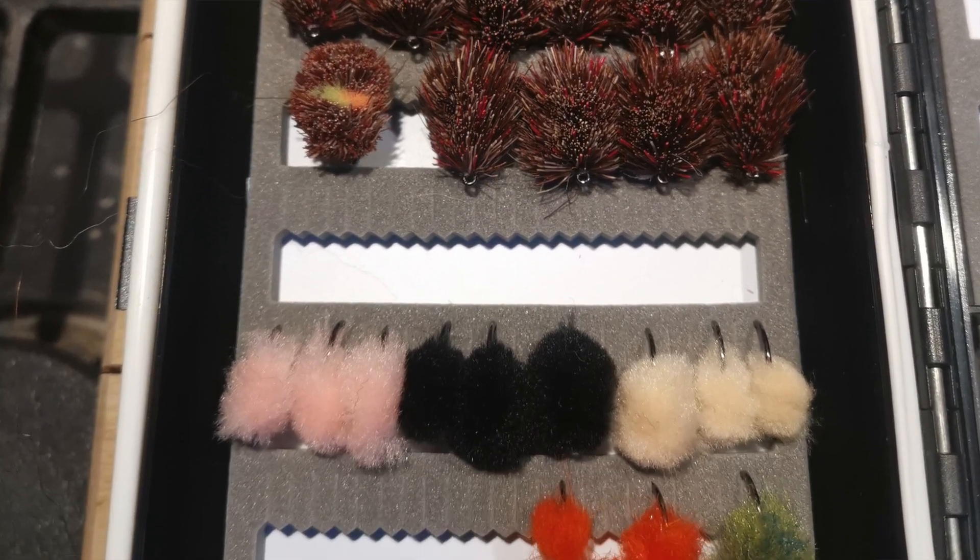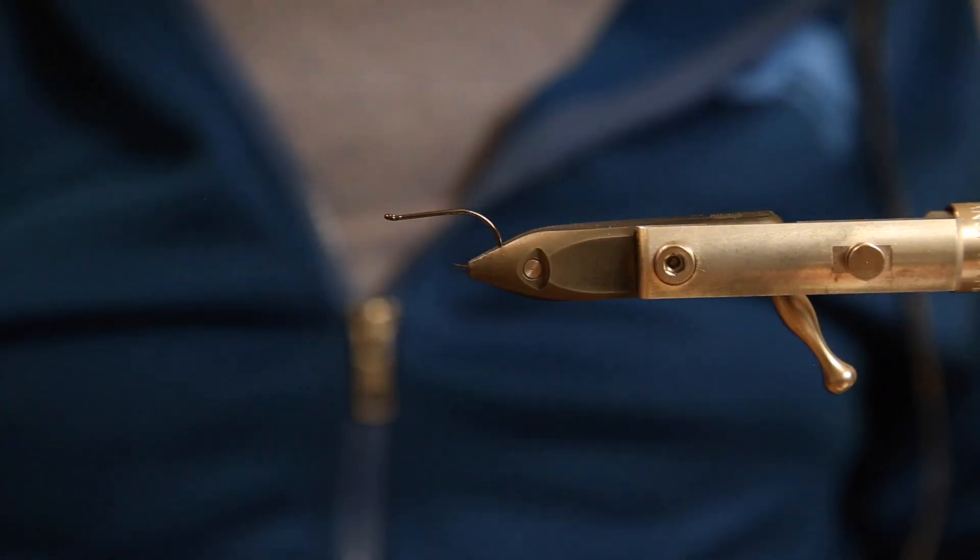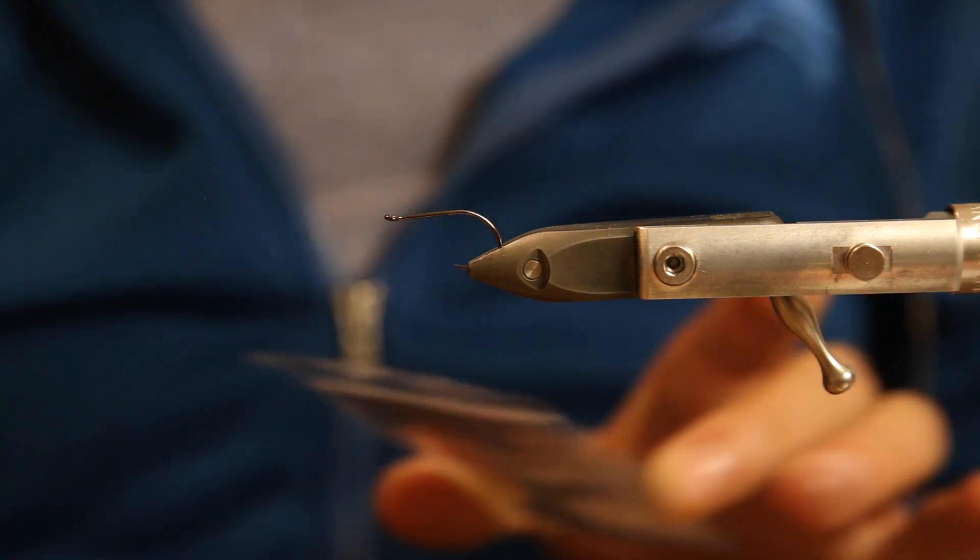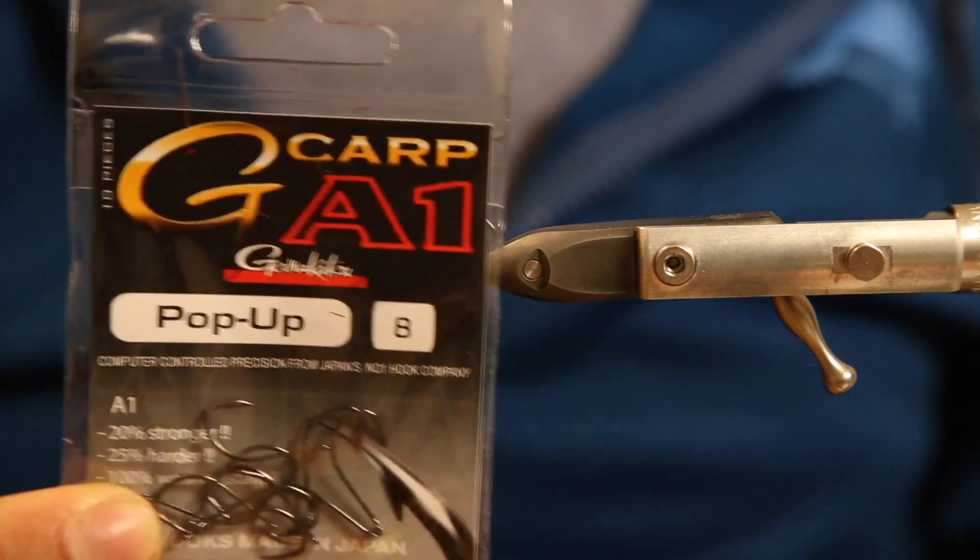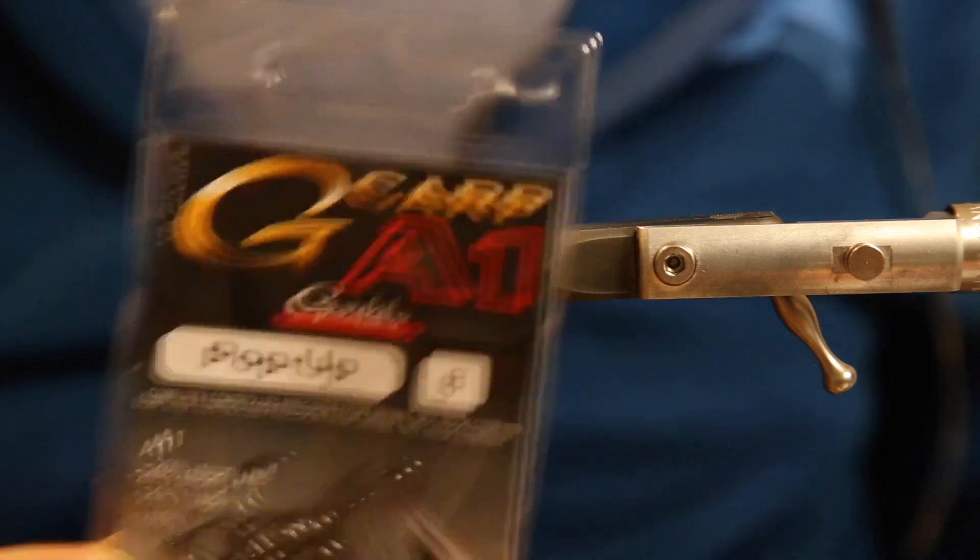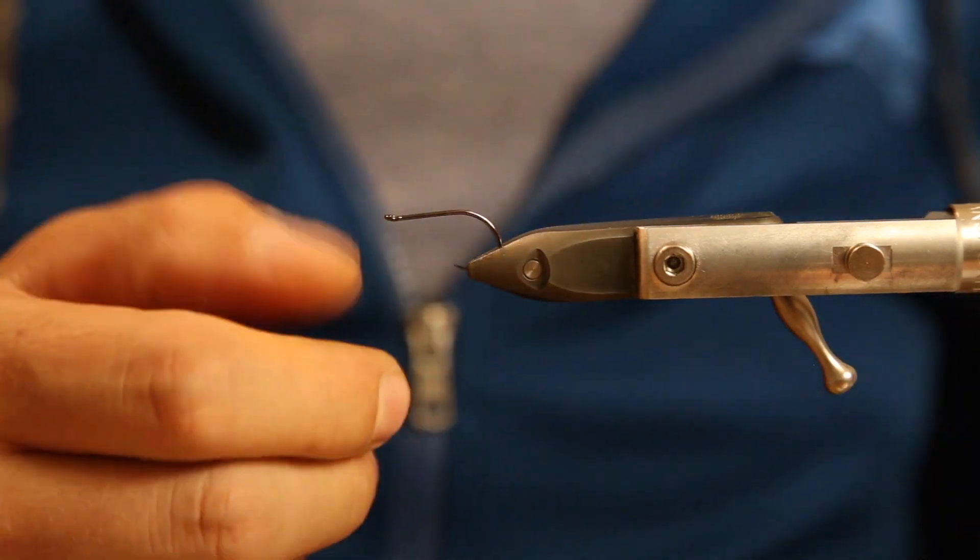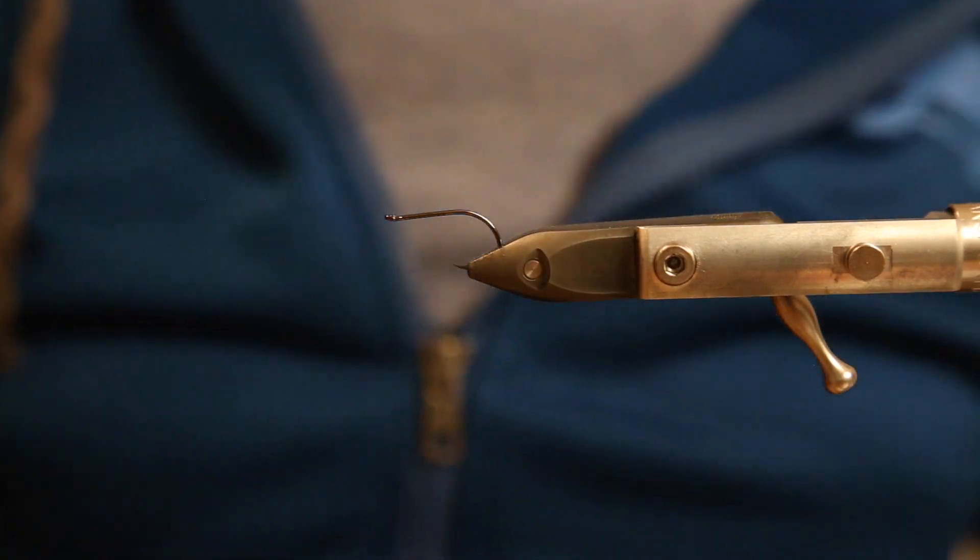Hey guys, today we tie a carp fly on a Carp A1 Kamakatsu hook. What we're tying is a dry fly for carp, an imitation of a dog biscuit.